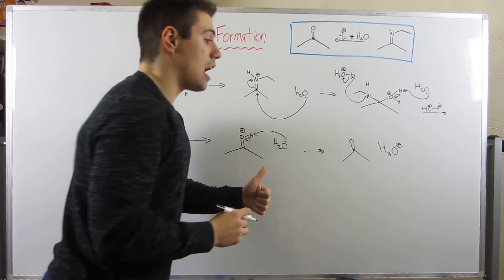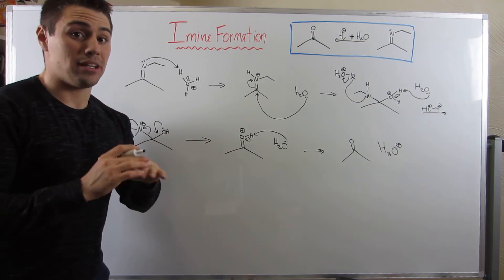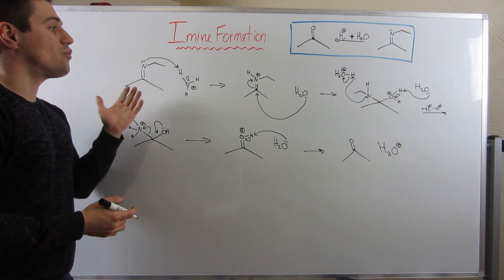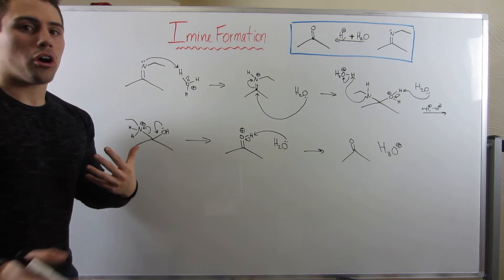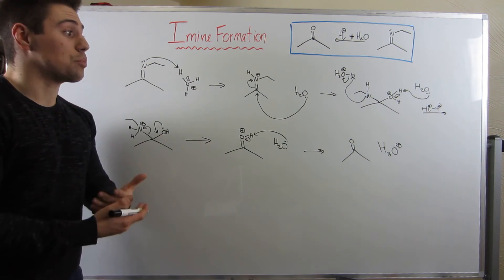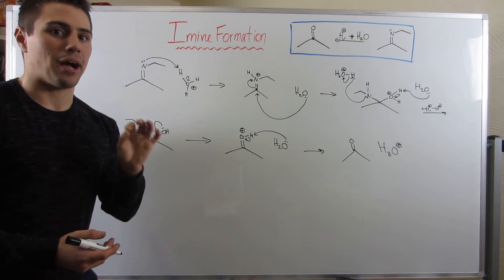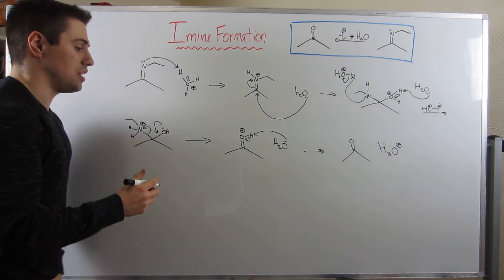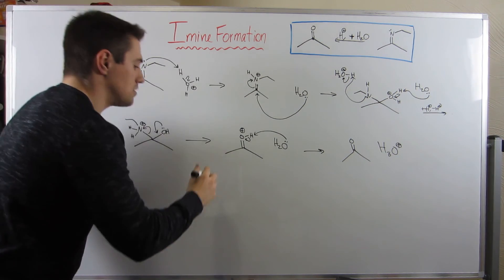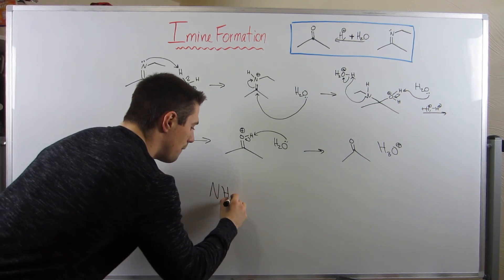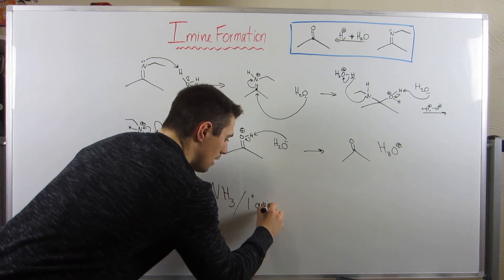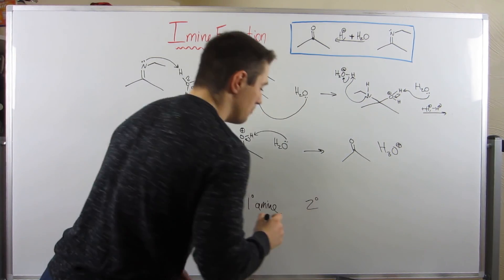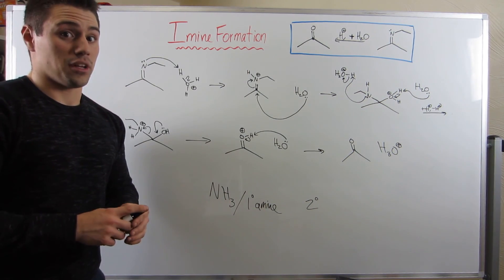Again, so the acetal mechanism, the imine mechanism, they only happen in acid, they need that acid catalysis. So you can see that these forward and reverse mechanisms are really not that bad. As long as you practice them, you guys will be able to do them in your sleep, I guarantee it. So, like I mentioned in the first part of this video, you can only form imines with either ammonia or a primary amine. I want to show you guys kind of what happens when you use a secondary amine, and that will yield us an enamine.